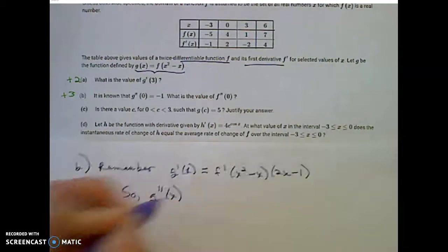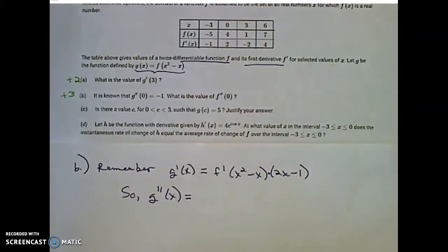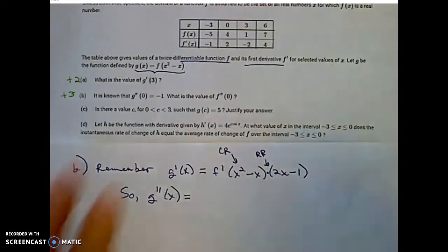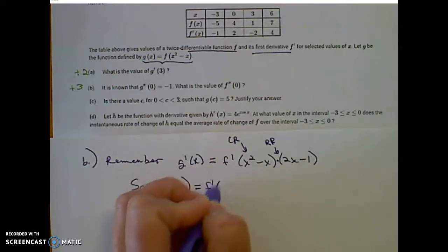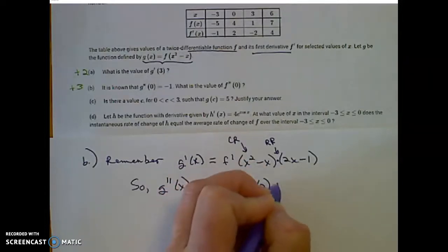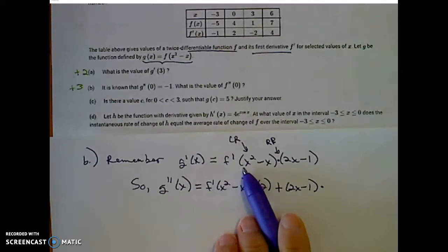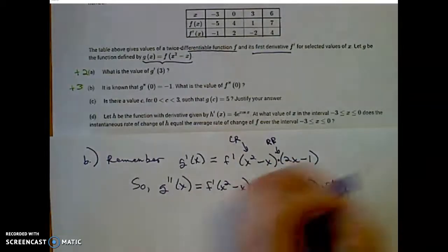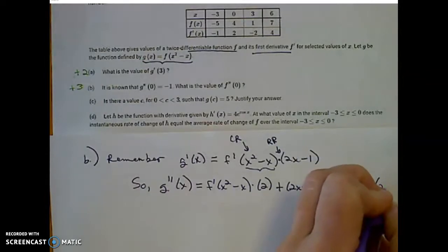To find g double prime of x, there are two points awarded for finding the second derivative. Please notice that in this case I need a product rule, and I'll also need a chain rule. Using the product rule — the first times the derivative of the second — the derivative of that second part is simply 2, plus the second, which is 2x minus 1, times the derivative of the first. If I find the derivative of that first part I need a chain rule, and it is going to conveniently be a second derivative of the composed function x squared minus x, times the derivative of the inner function, which is 2x minus 1.